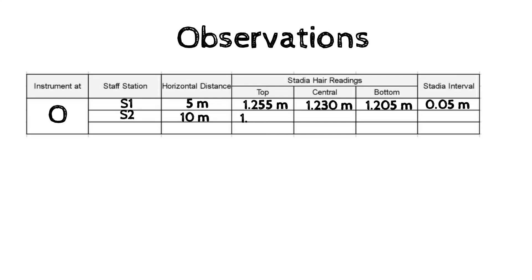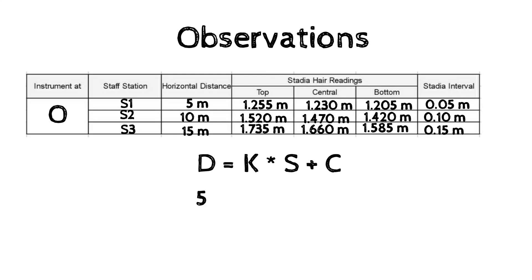It can be done for all three readings. O is the instrument station. S1, S2, S3 are staff stations with horizontal distances 5 meters, 10 meters, and 15 meters. We can use the distance formula: D = K*S + C, where K is the multiplying constant and C is the additive constant. We will write equations for three observations.